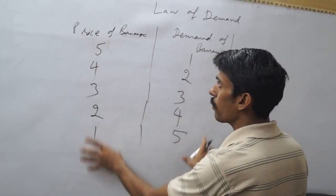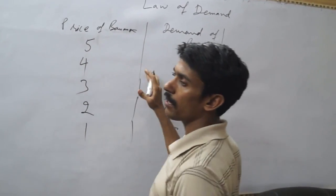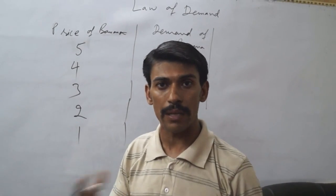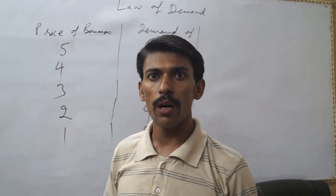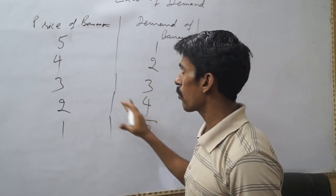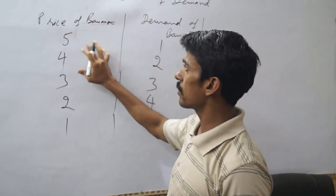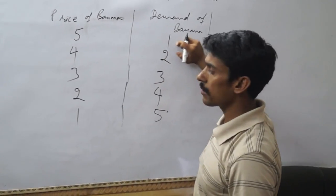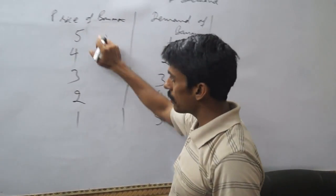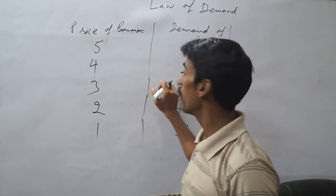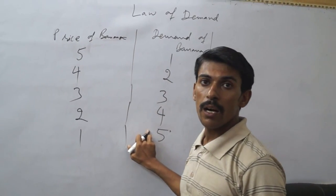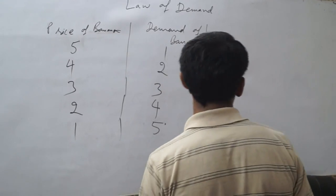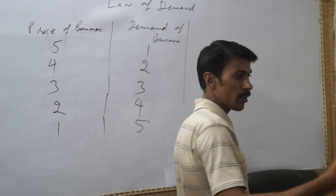So the relationship between price and demand is inverse. If price is increasing, demand is decreasing. If price is decreasing, demand will increase. We can show it in the graph.